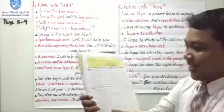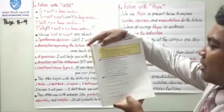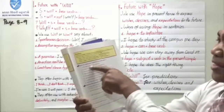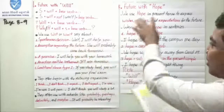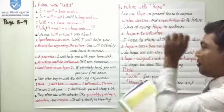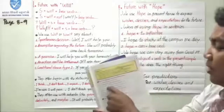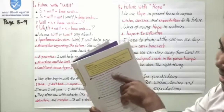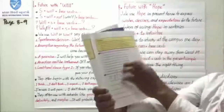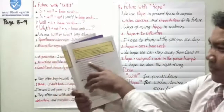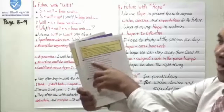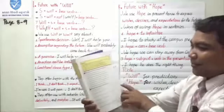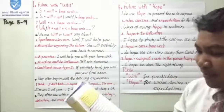Exercise three: read the sentences and underline the correct option from the choices given side by side with a slash. Choose based on the grammar structure we learned today. For example, number one: 'I hope they're right' — not 'they is' — because the subject pronoun 'they' takes the base verb form in present simple. Numbers two through eight, I wait to see your answers.